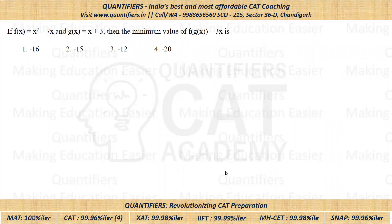So first of all, it is given that F of X is X square minus 7X and another function G of X is given X plus 3. We have to find minimum value of this expression.